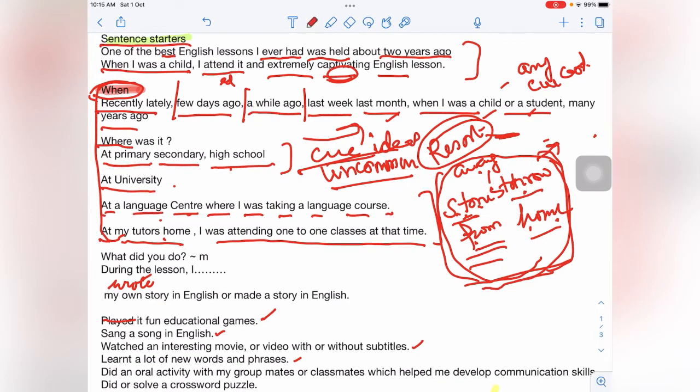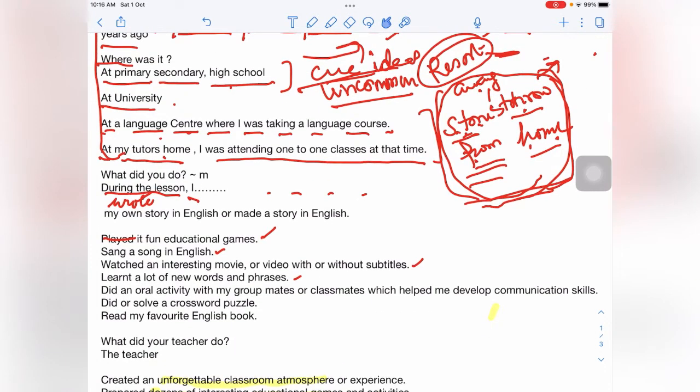At my tutor's home, I was attending one of the classes at that time. This can be when. I am giving you so many ideas. And this can be used anywhere where you want to say at my tutor's home while I was attending one of the classes. Anything you can say. Now, what did you do in the lesson? This is important. During the lesson, I - these are the ideas which I am giving you. Any of the ideas you can develop. See, I wrote my own story in English, or I made up a story in English. You can say I cooked up a story which was liked by everybody.